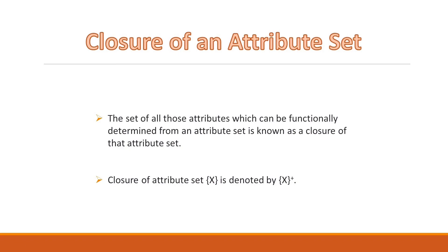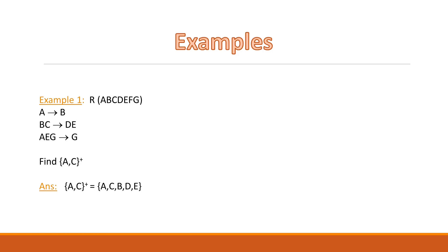Now let's look at some examples for better understanding. In example 1, we are given a relation R with attribute set {a, b, c, d, e, f, g} and a set of functional dependencies: a→b, bc→de, and ag→g. We have to find the closure of {a, c}. Basically, we have to determine all those attributes which can be obtained from the two given attributes a and c.